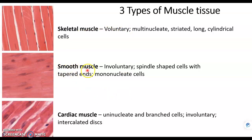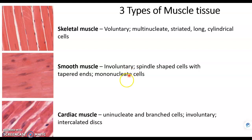Smooth muscle is our organ muscle. This muscle exists in the walls of our visceral organs. Each smooth muscle cell has one nucleus, and smooth muscle tissue is involuntary. The same with cardiac muscle — although it is striated like skeletal muscle, it is involuntary like smooth muscle, meaning we don't consciously contract these muscles. This happens automatically.